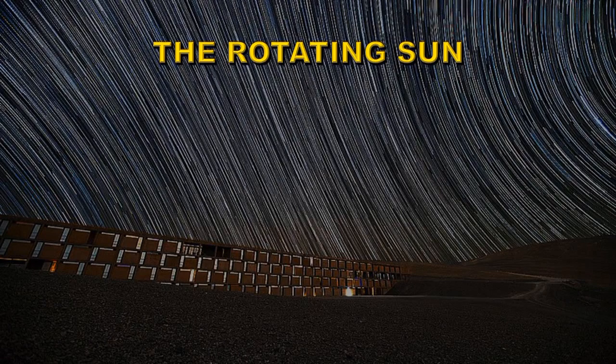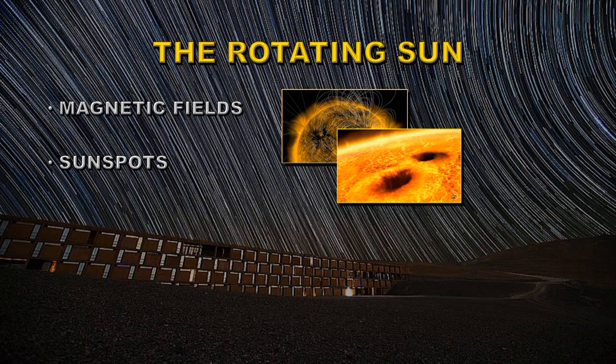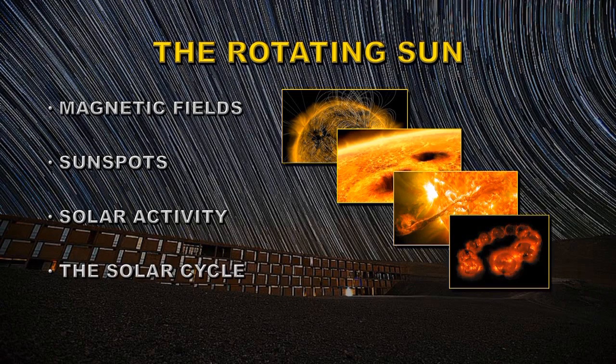So this concept of rotation is very important. The rotation of the Sun explains the presence of magnetic fields on the Sun. It also explains sunspots, solar activity like flares and coronal mass ejections, and the solar cycle itself. So the fact that a star rotates is very important. The faster a star rotates generally the more active it is. The slower a star rotates the less active it is.